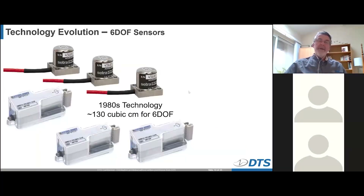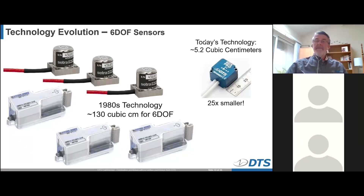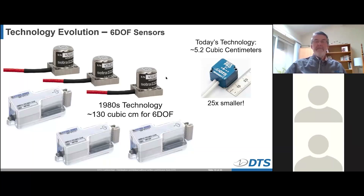This is an important evolution. When I first started doing dynamic testing in the late 1970s and 1980s, making a six-degree-of-freedom measurement would typically require three large linear accelerometers and three solid-state gyros for a total volume of maybe 130 cubic centimeters. However, just a few years ago, DTS came out with a very small six-degree-of-freedom measurement cube — the 60X Pro — that's 25 times smaller and much lower power. The evolution from big mechanical gyros to solid-state technology has really made a big difference in our ability to measure things.